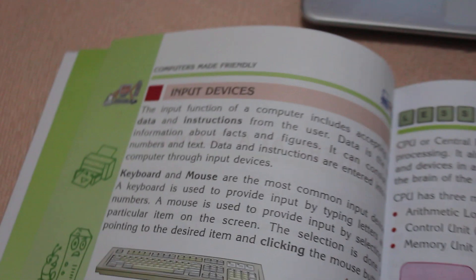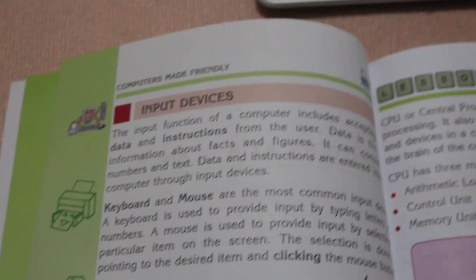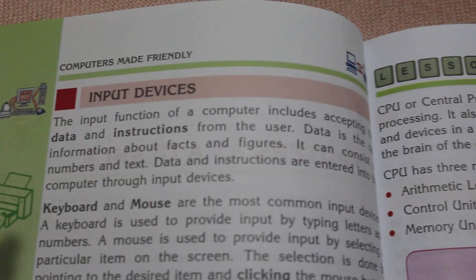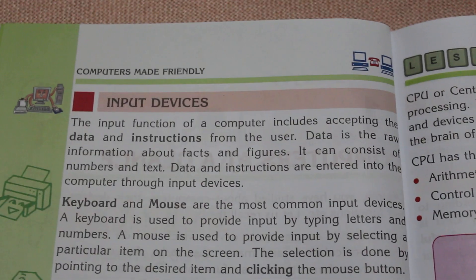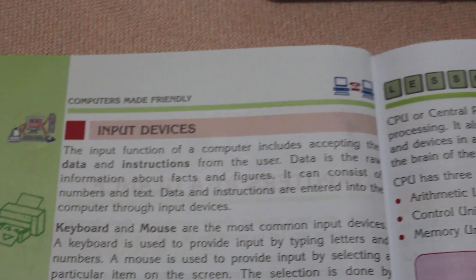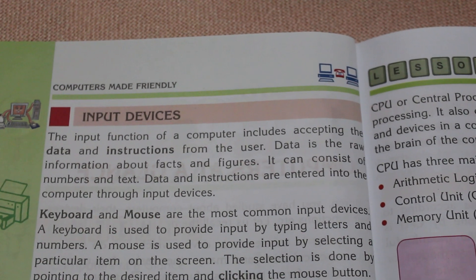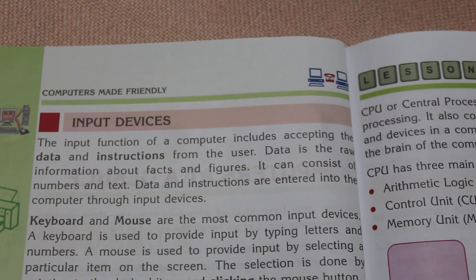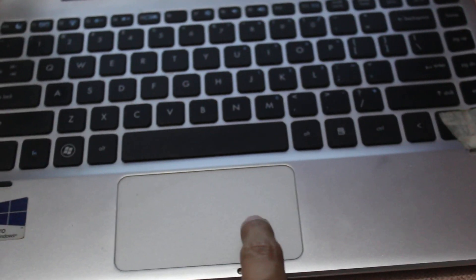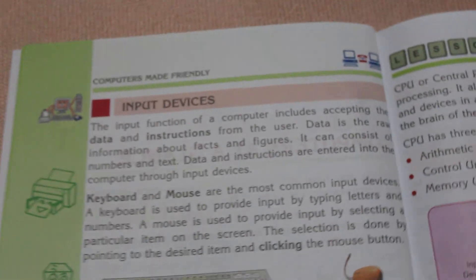On page six: Input Devices. The input function of a computer includes accepting data and instructions from the user. Data is the raw information about facts and figures — it can consist of numbers and text. Data and instructions are entered into the computer through input devices, such as this touchpad and keyboard.